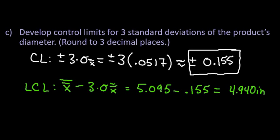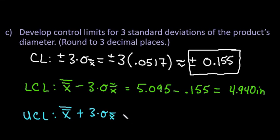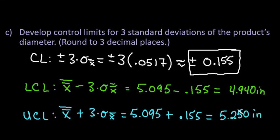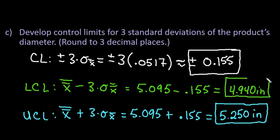If a value is outside that lower threshold, it's more than three standard deviations away from the mean, which is considered an unusual value. For the upper control limit, we take x-bar-bar plus 3 times sigma x-bar: 5.095 plus 0.155. I notice I wrote 4 something — I looked at the wrong place on my paper. The upper control limit is 5.250. My upper control limit can't be less than my lower control limit, so that correction gives us control limits of 4.940 to 5.250.